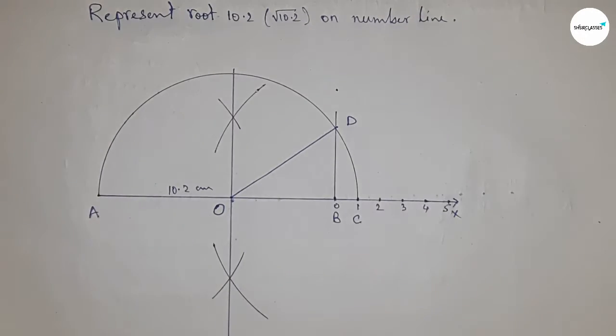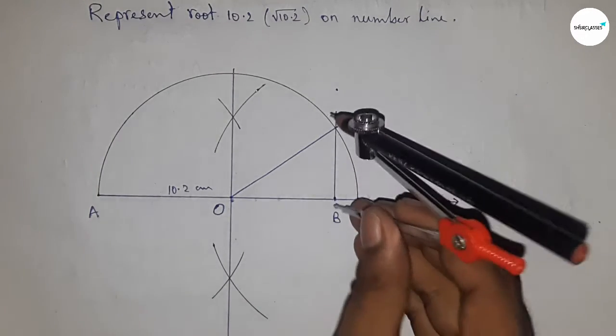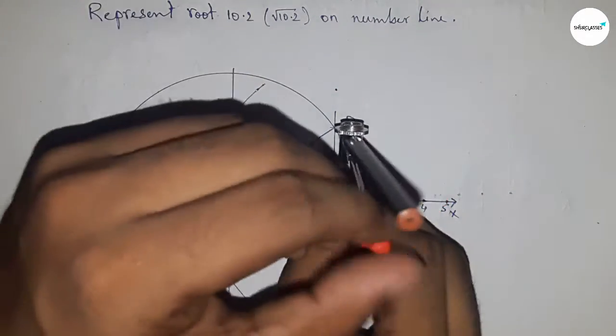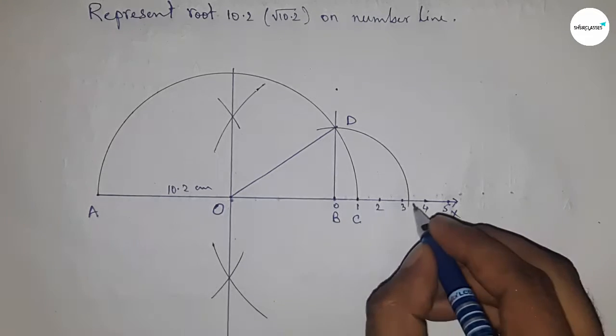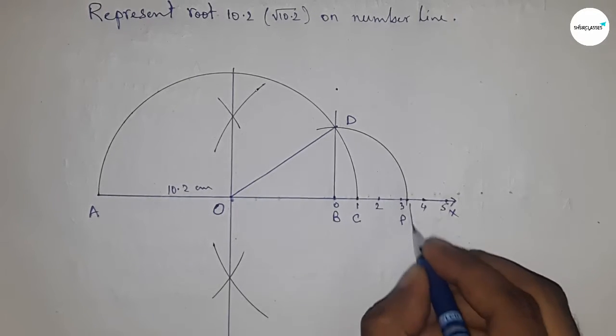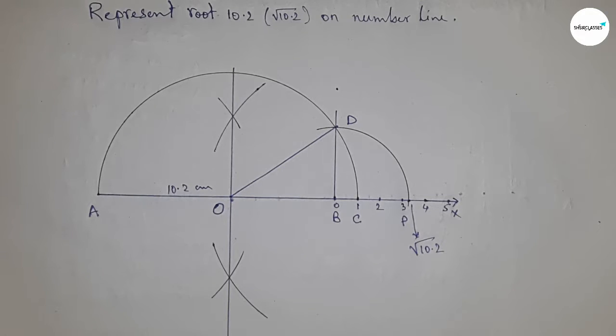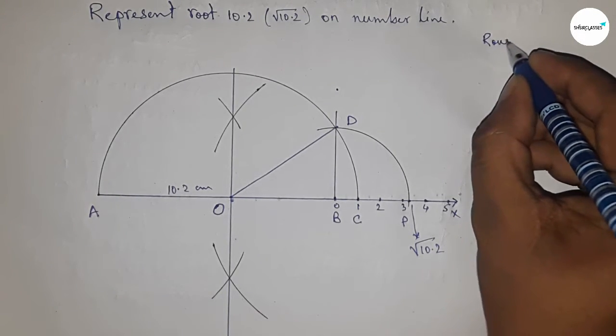Take the length BD using a compass to draw an arc which meets the number line at point P. This is the representation of root 10.2 on the number line.